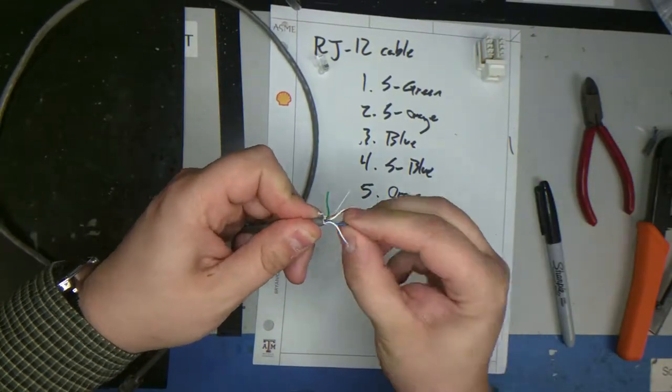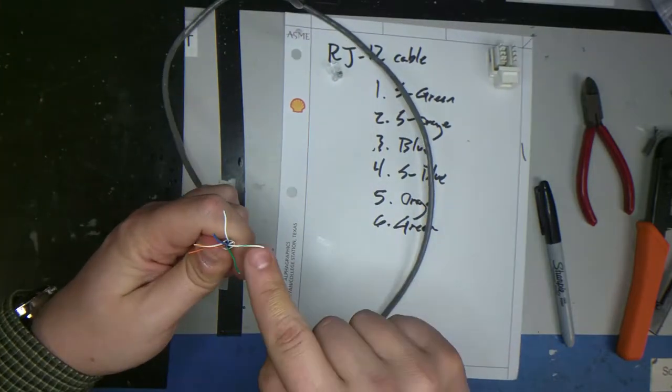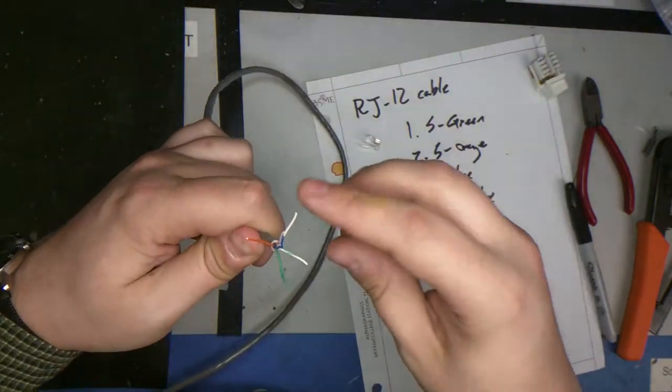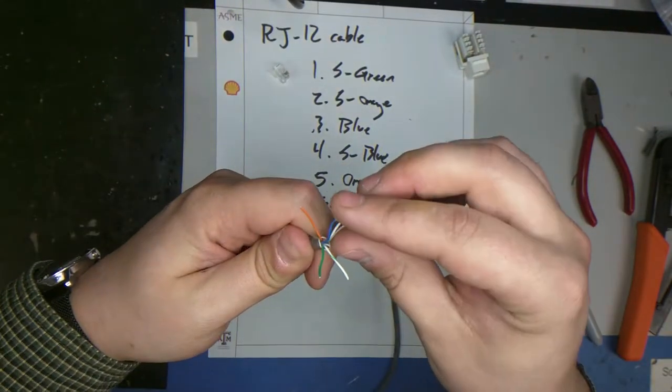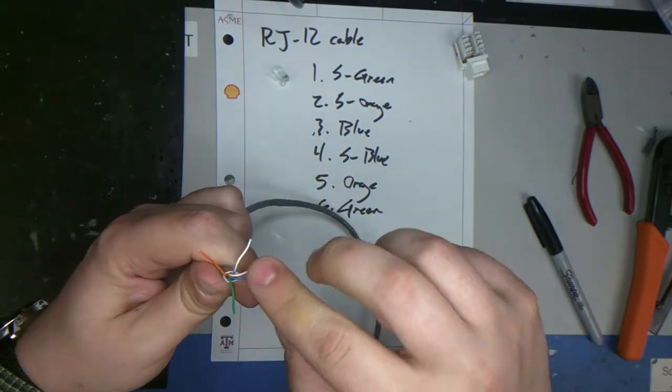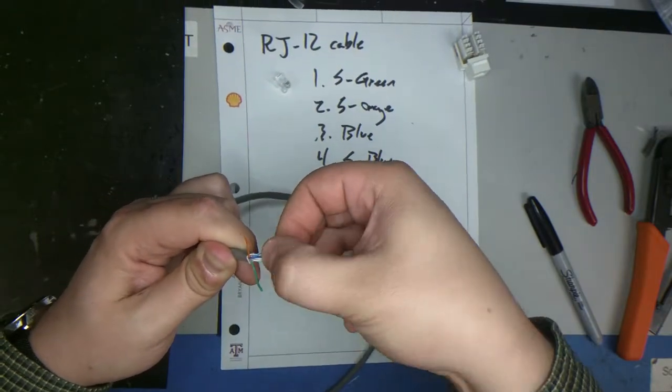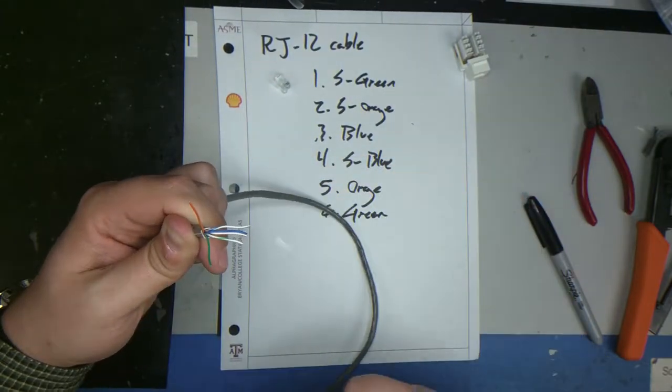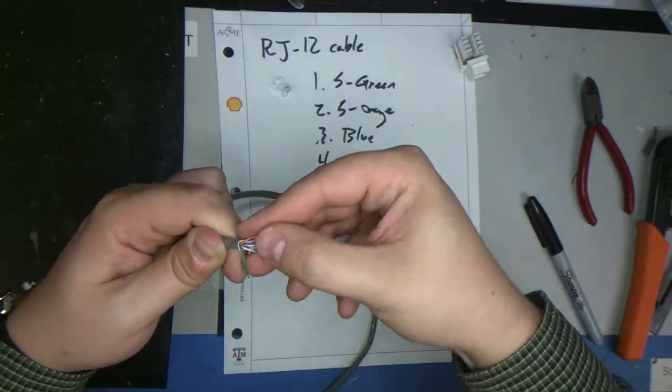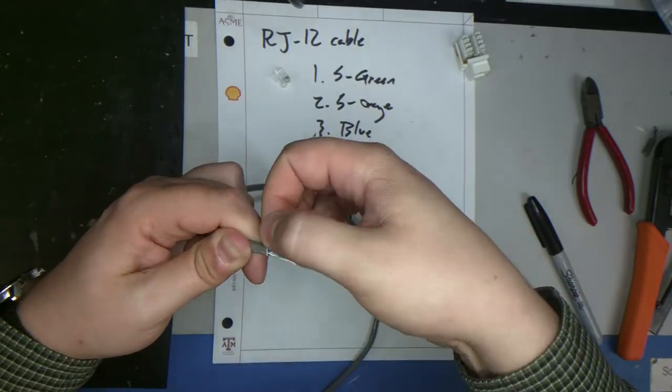And then we'll just kind of lay them out into our fingers with the proper color. So we'll start with stripey green, pull stripey orange over, then solid blue, then stripe blue, then orange. They're all solid core so you can kind of work them a little bit and then they'll stay in position pretty well.